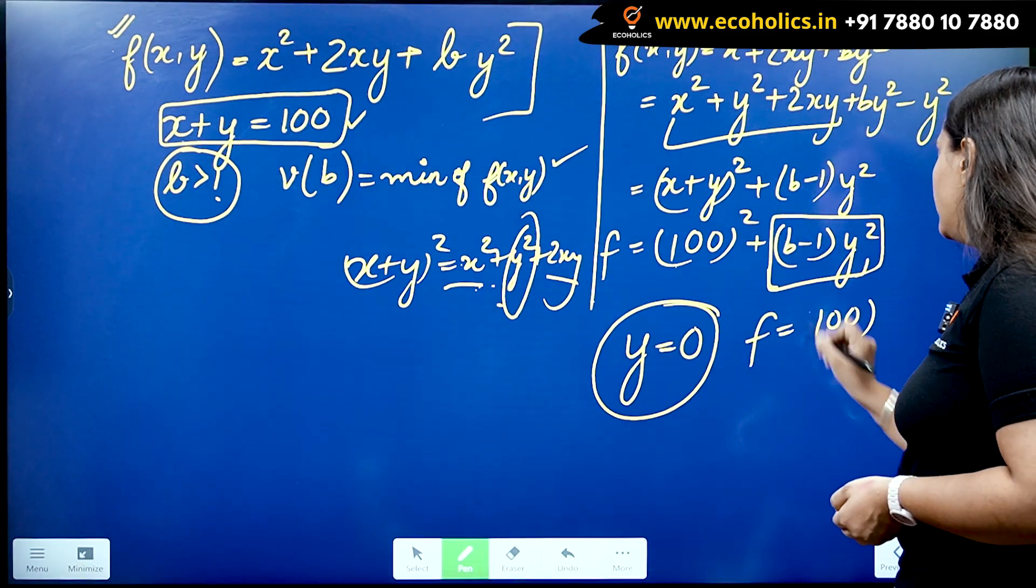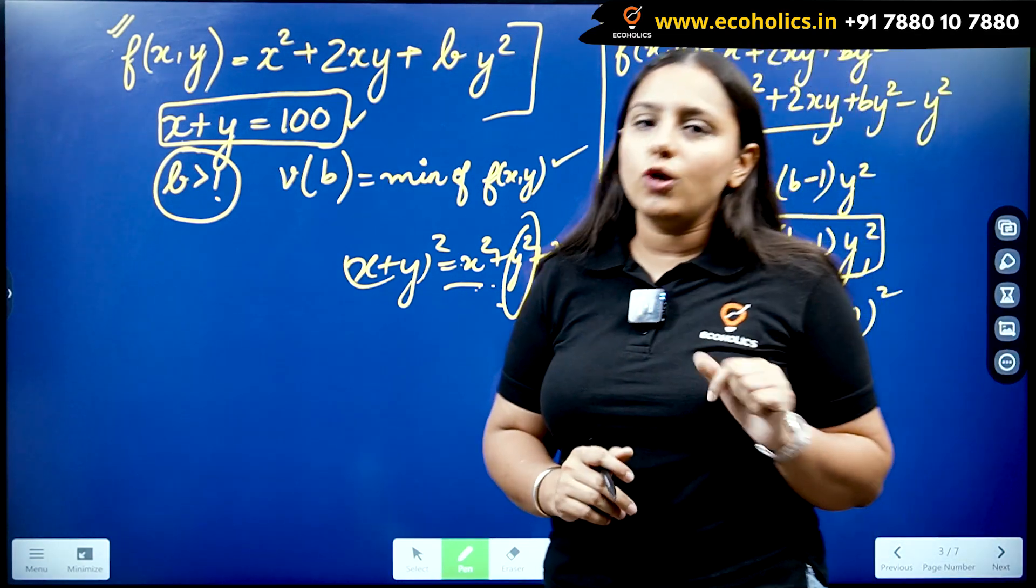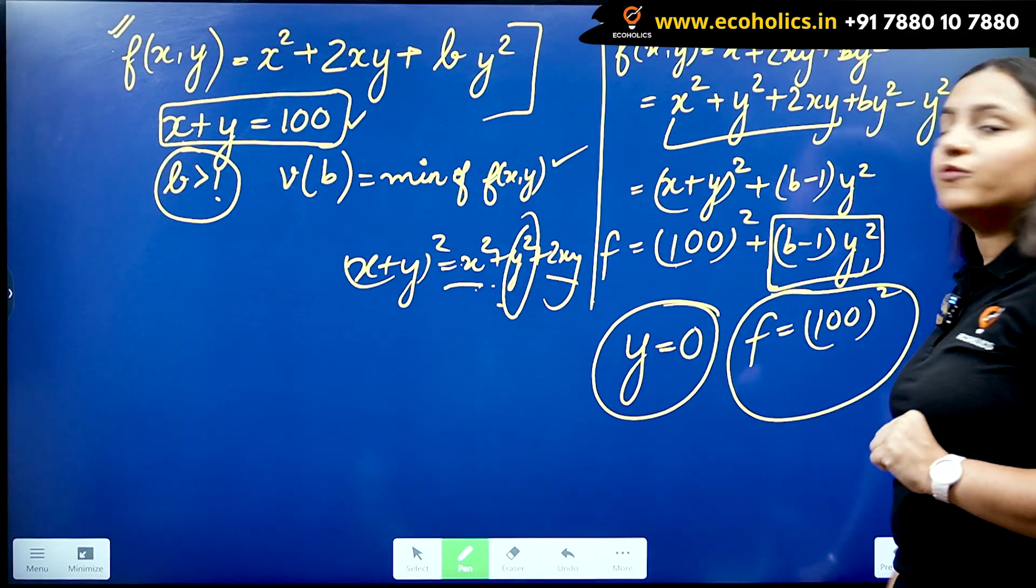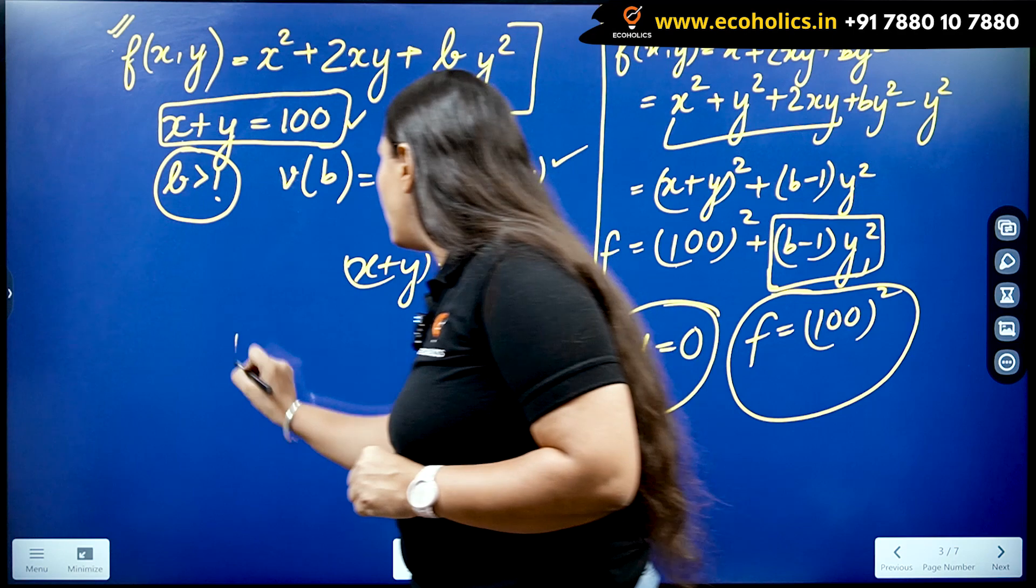So I can do this thing that y is going to be 0. So if y becomes 0, f is going to become 100², and this is the least minimum value this function can obtain. So it means v(b), the v in terms of b, will be equal to 100².